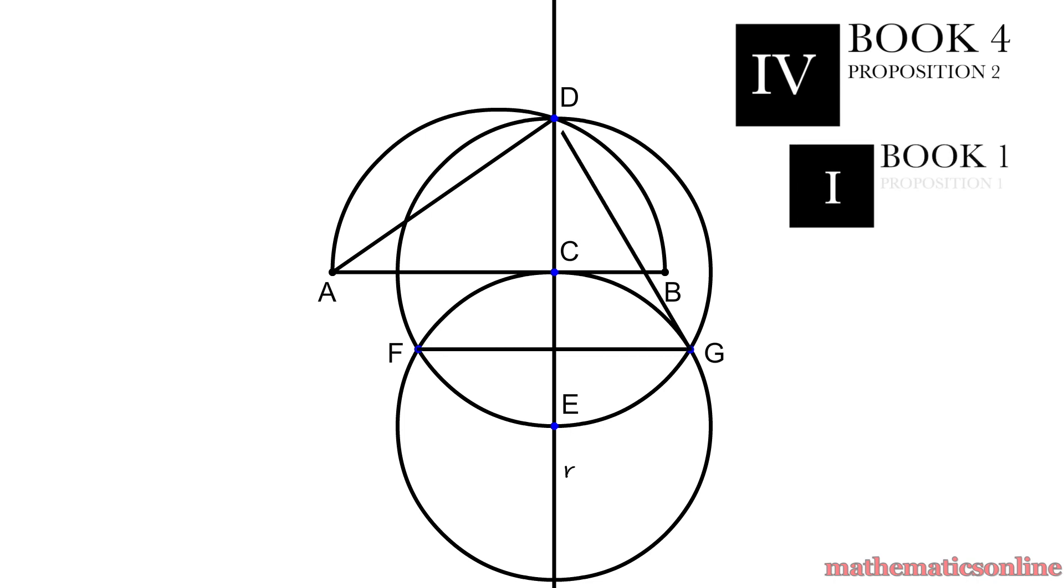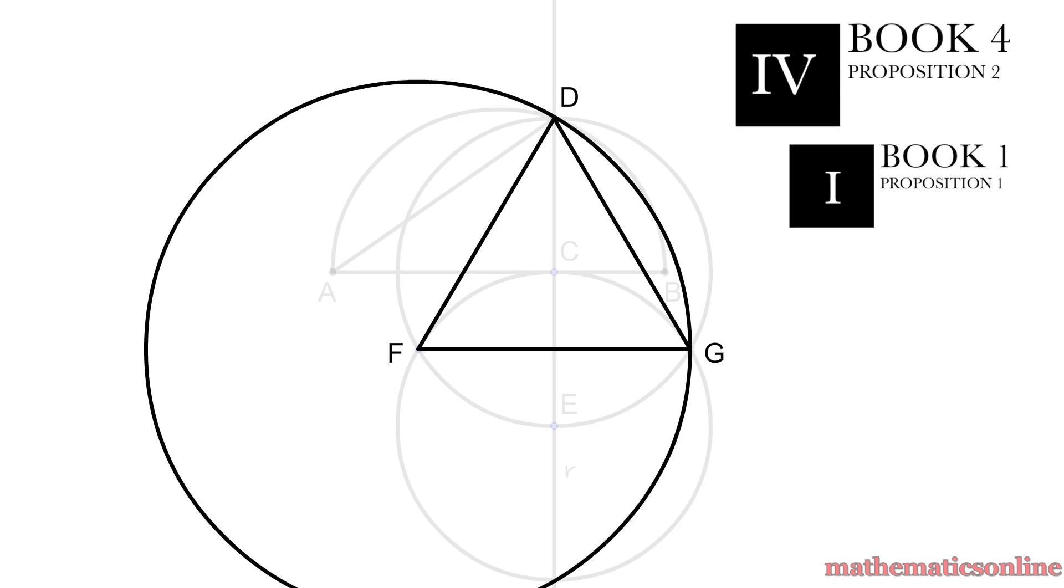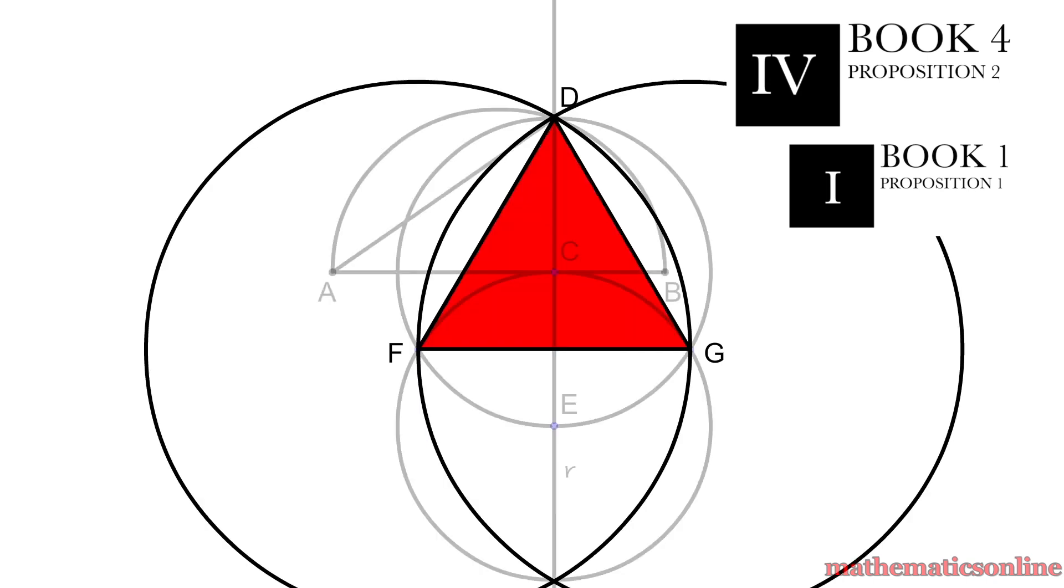So by Book 1 Proposition 1, we have constructed an equilateral triangle DFG, which is inscribed inside a circle.